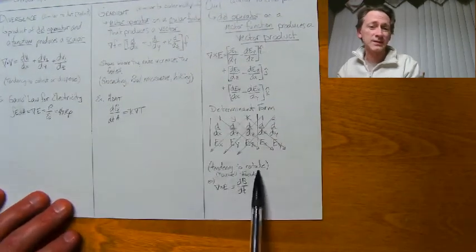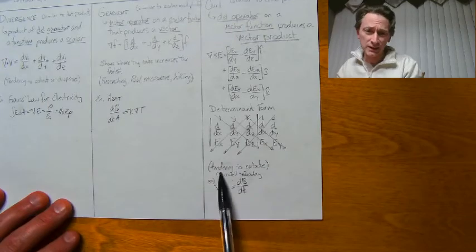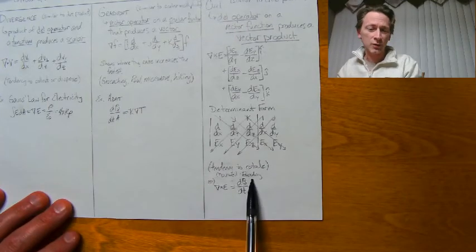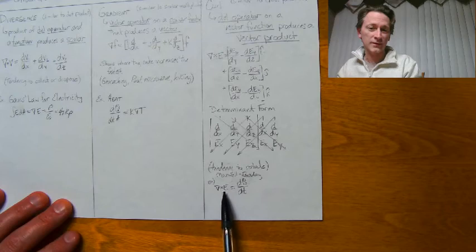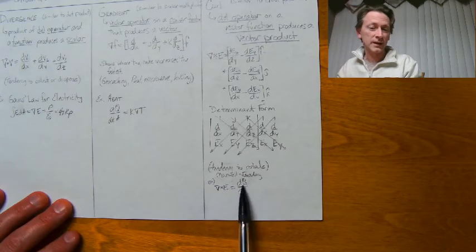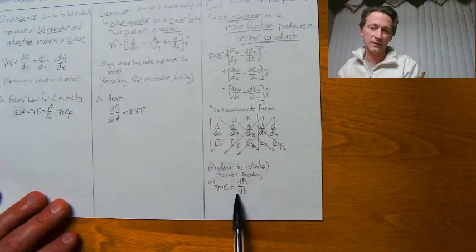What it does is tell you the tendency to rotate. The Maxwell-Faraday equation is an example of this, where you have the electric field and the magnetic field, and it shows you that tendency of the magnetic field to rotate.